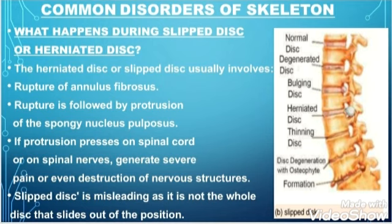What are the factors responsible for rupturing or tearing of the annulus fibrosis? These include any accident, any injury, lifting a heavy object, or sitting in the same posture for several hours. All these factors can cause rupturing of the annulus fibrosis. In the second step, rupture is followed by the protrusion of the spongy nucleus pulposus. When the nucleus pulposus is outside, it presses the spinal cord and the spinal nerves.